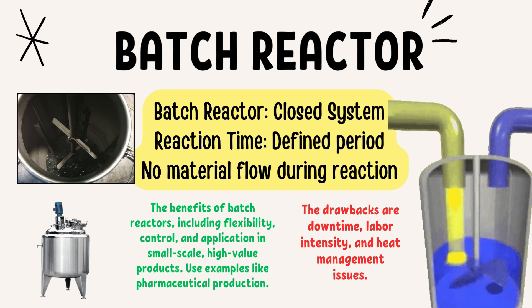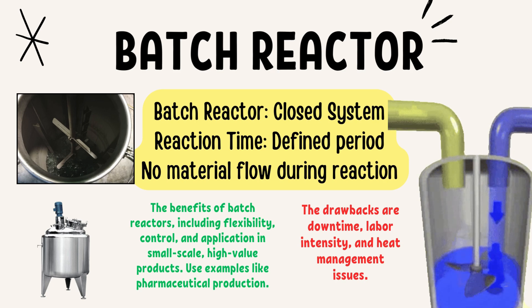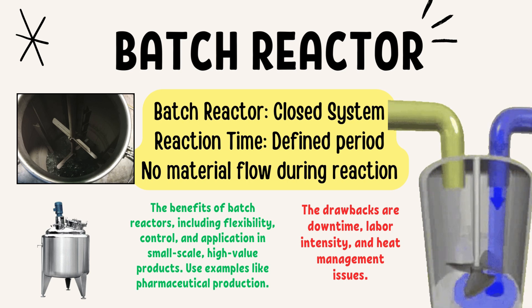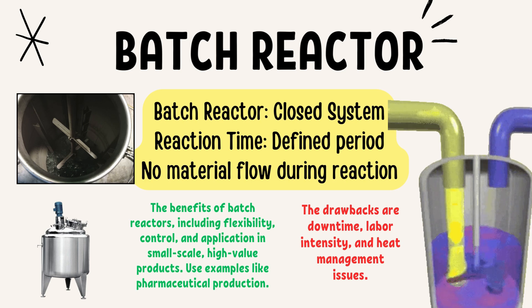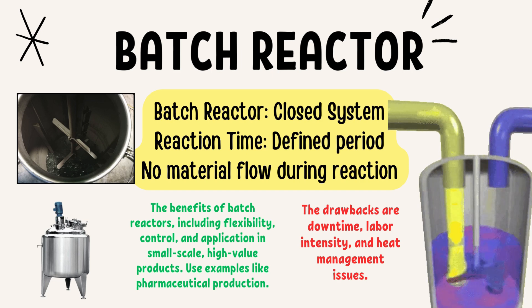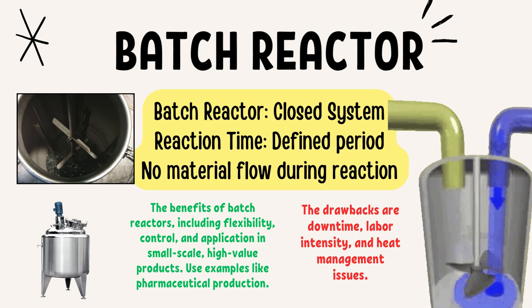However, batch reactors have drawbacks. They are not suitable for large-scale production because of the downtime required to load and unload the reactor and clean between batches, making the process labor-intensive and less efficient at large scale. Additionally, managing heat transfer can be challenging, especially for exothermic reactions where heat release can lead to temperature hotspots. In summary, batch reactors are best when flexibility is more important than scale — they shine in applications requiring high precision and control, but are less efficient for continuous or high-volume production.